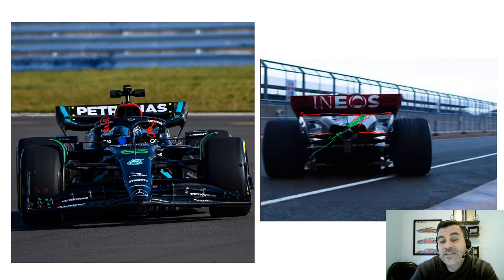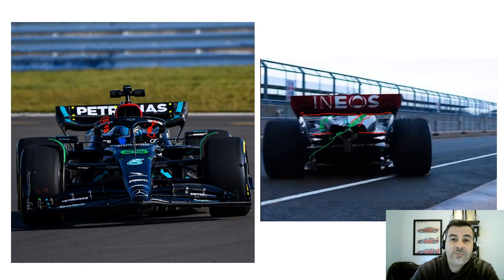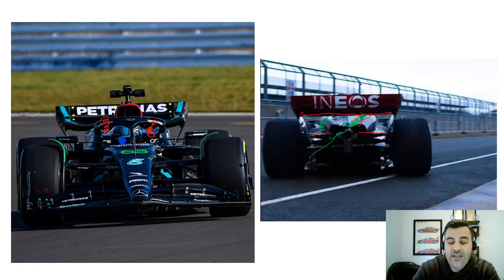Now, what happens if you don't have this? What you could potentially get is all of these wake structures moving down the body of the car and actually interacting with your upper beam wing or moving over the top of your diffuser. And this is exactly what you do not want. So I think that's what Mercedes is doing here with this double water slide on the uppermost portion of the engine cover — housing all of the dirty wake structures from the cockpit losses and the halo losses, moving these in between the rear wing and the upper beam wing.